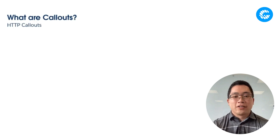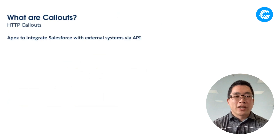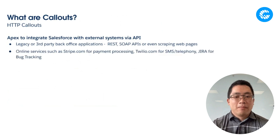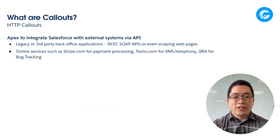What are callouts? HTTP callouts in Salesforce are a very common form of integration you might find when you wish to connect Salesforce to other systems. In many different companies you may have other APIs, other external systems — anything from legacy third-party applications, back-office systems, or maybe even scraping web pages for content you need to consume inside Apex. This may include things like payment processing, telephony, bug tracking, and all sorts of different things you may wish to integrate your Salesforce instance to.